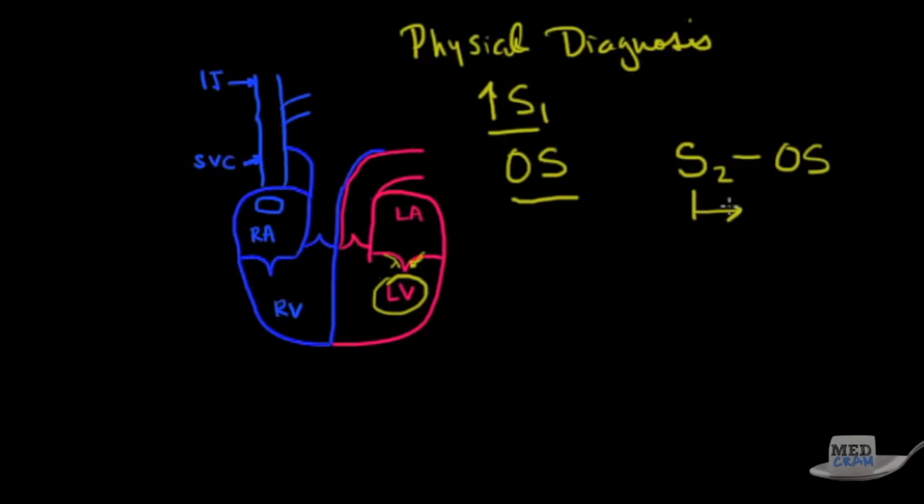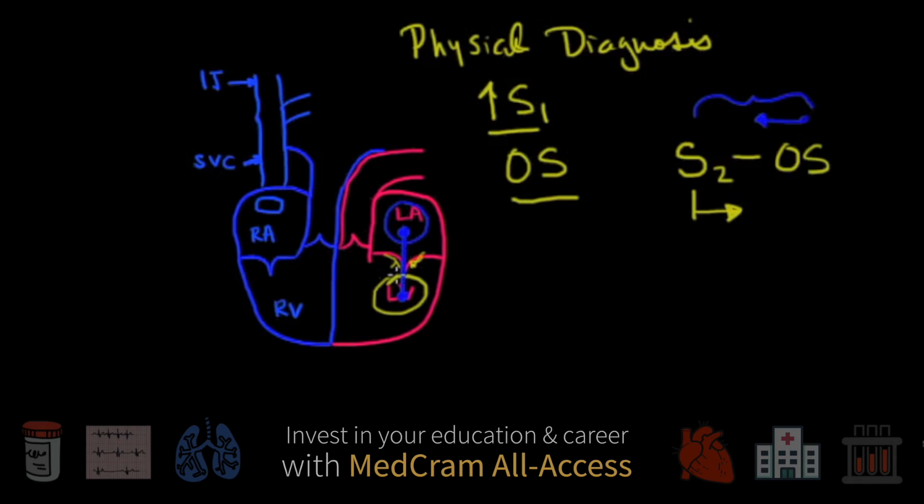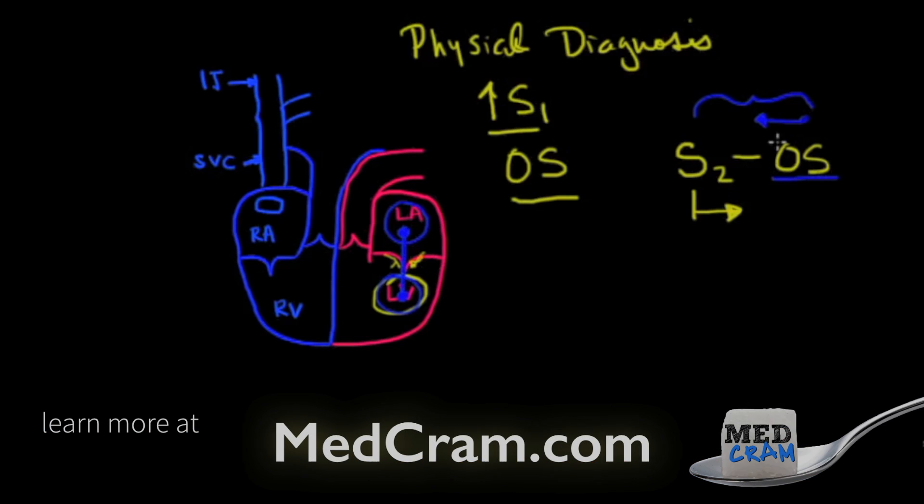The opening snap occurs at the beginning of diastole when the mitral valve opens. It occurs right after S2, so you have S2/OS. S2 marks the end of systole and beginning of diastole. The key here is that if the opening snap occurs earlier, that means it's opening up early in diastole, which means there must be a bigger gradient across this valve. The bigger the gradient, the worse the mitral stenosis. So earlier equals worse.